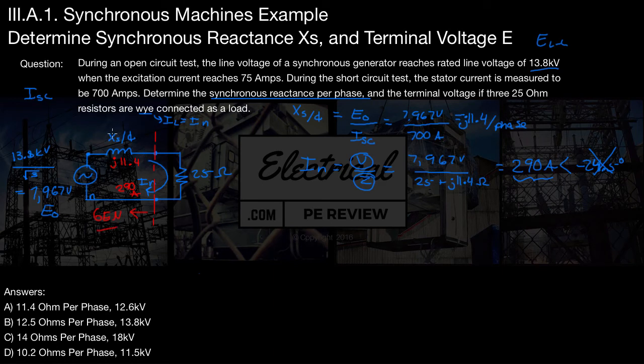This part of the diagram, we're looking at one phase of the internal winding of the generator. That's our generated voltage, and that's our synchronous reactance per phase. Now, everything on the right side of this dash line is going to be external to the generator, and it's going to be the load or the electrical distribution system, the grid, what have you.